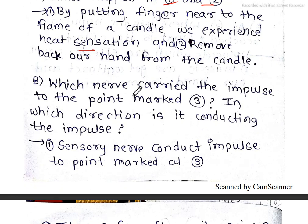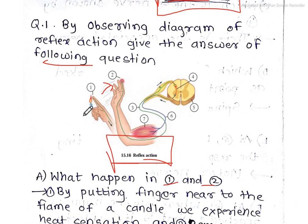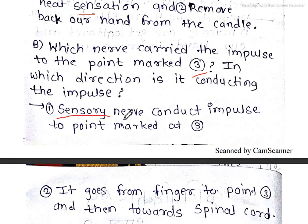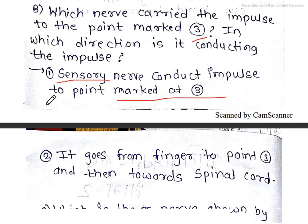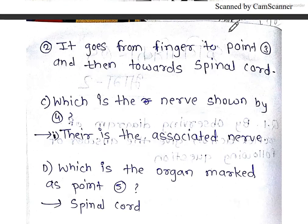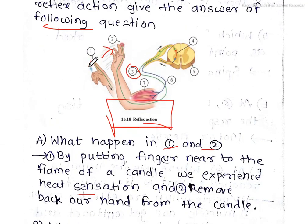Part B: Which nerve carried the impulses to the point marked three? In which direction is it conducting the impulses? So we have heat sensation at point 3. What do we call it? Point 3, that means sensory nerve conducts the impulses to point marked as three. Then it goes from finger to point 3 and then towards the spinal cord. In the diagram, point 3 is on the side of the spinal cord.